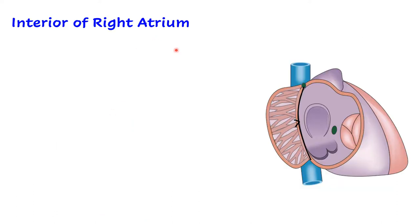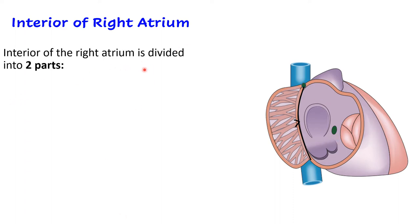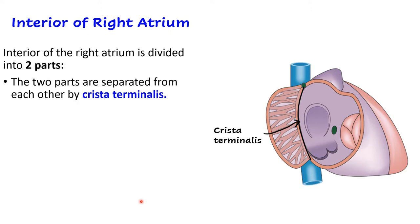Looking at the interior of the right atrium, the anterior aspect has been cut and reflected. The interior is divided into two parts by the thick crest known as the crista terminalis, which extends from the superior vena cava to the inferior vena cava. On the outer side, at exactly the same position, is the shallow groove known as the sulcus terminalis.